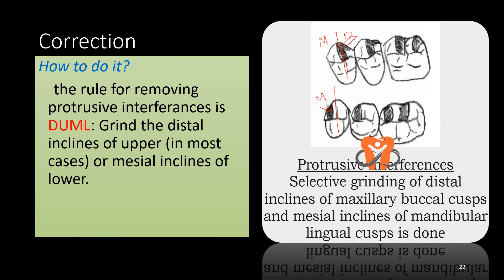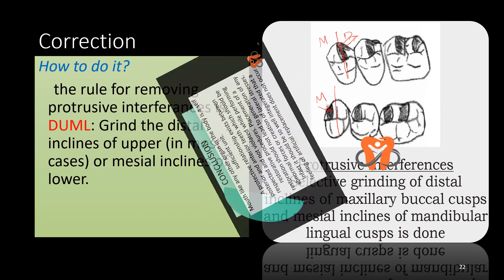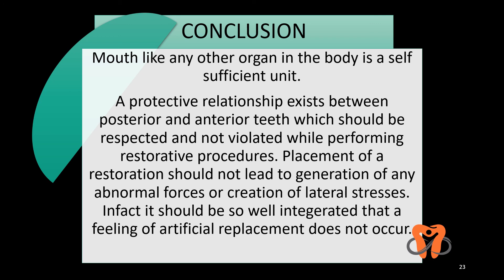We have now removed the centric relation interferences, the working side, the non-working side, and the protrusive interferences. To conclude: the mouth, like any other organ in the body, is a self-sufficient unit. A protective relationship exists between the posterior and anterior teeth which should be respected and not violated while performing restorative procedures. When we place a restoration in the mouth, it should not generate abnormal forces or create lateral stresses — it should be so well integrated that the feeling of artificial replacement just does not occur.